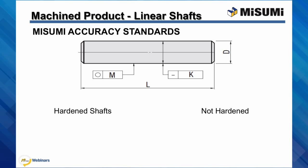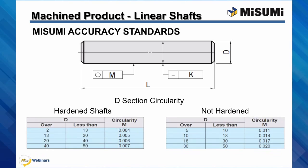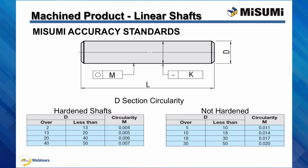The first measurement of accuracy is the D-section circularity as seen in the diagram. For hardened shafts, the circularity tolerance is as low as 4 microns. For non-hardened shafts, the tolerance is as low as 11 microns. This is critical as the tolerance needs to fit with the linear bushing that will be paired with the shaft.